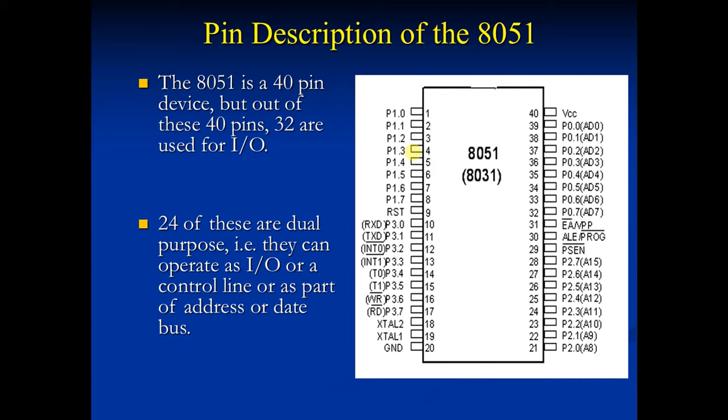Now move on to port 2. As you can see, there are some address lines A8 to A15. Port 2 is an 8-bit bi-directional I/O port. It is also bit and byte addressable. During external memory access, it functions as higher order address bus.